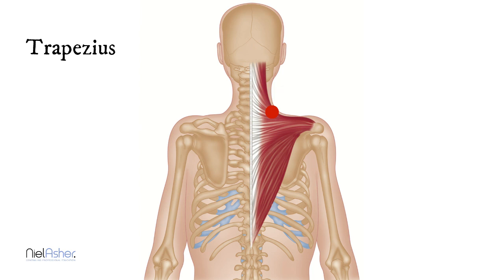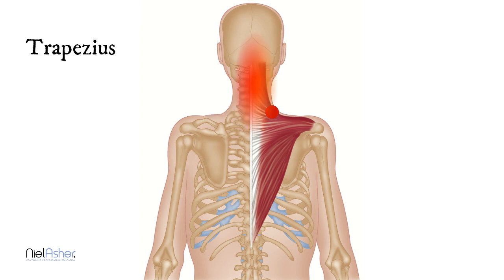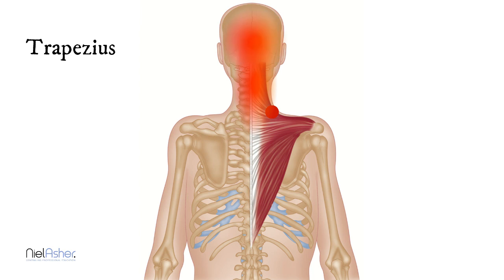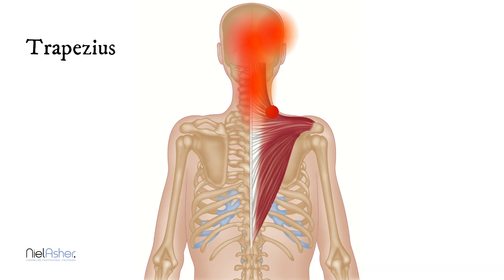This is the most common trigger point in the human body — more common than any other occurring anywhere, which makes it really important to know about. When this trigger becomes active, it will refer pain upwards to the base of your skull, then vaguely into the back of the head, and much more strongly into the temple on the same side of your head.